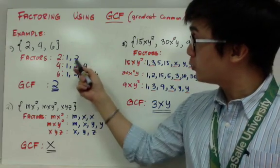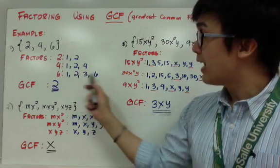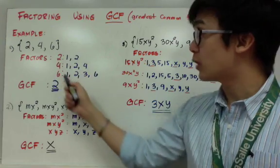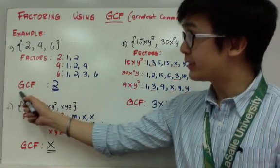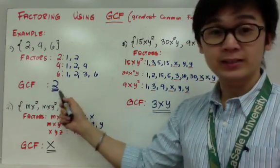you will see that 2 is common to 2, 4, and 6 and it is the highest factor for each one of them. That is why our GCF for 2, 4, and 6 is positive 2.